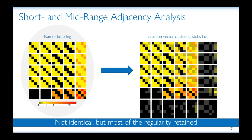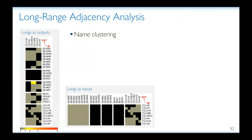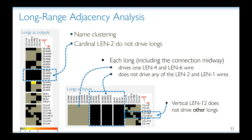Now let us turn to the adjacency analysis concerning long wires. The heat map on the left focuses on the longs as outputs of the switch box, while the heat map on the bottom focuses on the longs as inputs to the switch box. We can notice that cardinal length-two wires do not drive any longs. We also see that each long drives one length-four and one length-six wire, but does not drive any of the shorter wires. Interestingly, the vertical length-12 wires do not drive other types of longs, and knowing that these vertical wires are the ones without the middle tap, they could possibly be the fastest option for long-distance vertical communication.